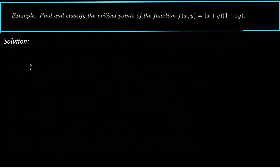Today we're looking at finding the critical points of a function and we want to classify those critical points depending on the second derivative test. To find the critical points, the first thing we do is set the gradient of the function equal to the zero vector. Basically that just means set each partial derivative of f equal to zero.